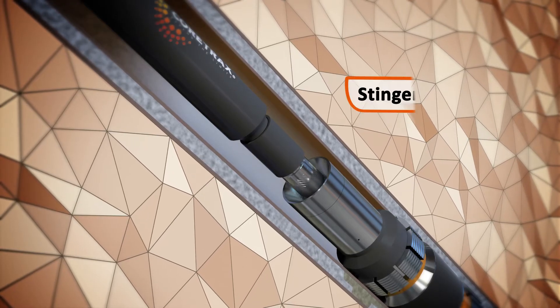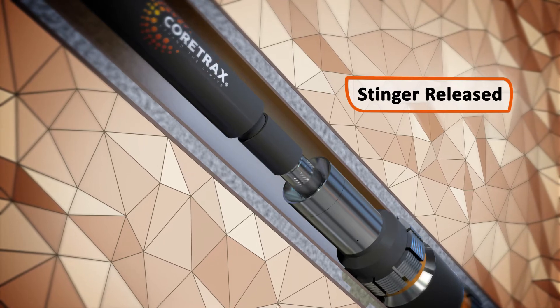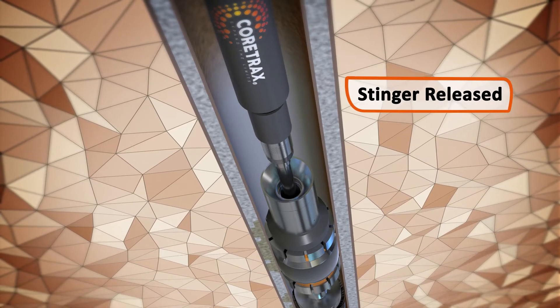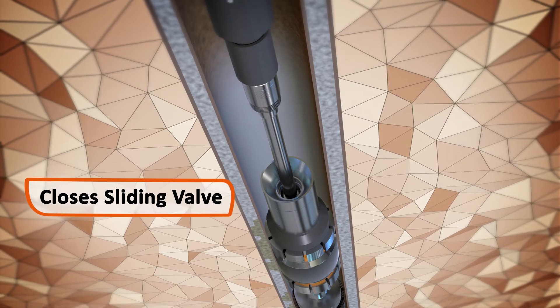Then the stinger is released from the inside of the CX sliding valve by rotating and is pulled above the plug, closing the valve.